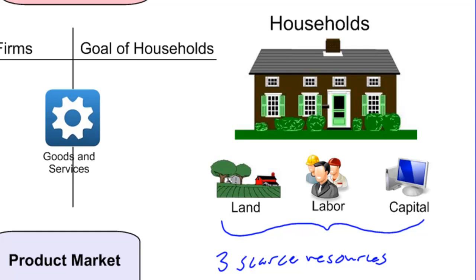Households are the owners of these scarce resources. Land is held by private individuals or through the public sector. Labor refers to workers who live at home and go to work each day. Capital is provided to the market economy through our savings of money, which will be explained later when we discuss how firms acquire capital in the production of goods and services.